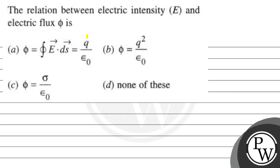Hello, let's see this question. The relation between electric intensity E and electric flux φ is... Four options are given.